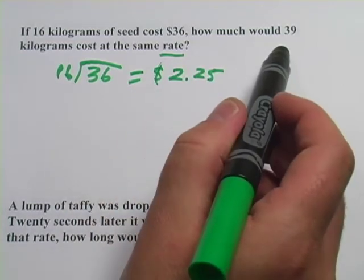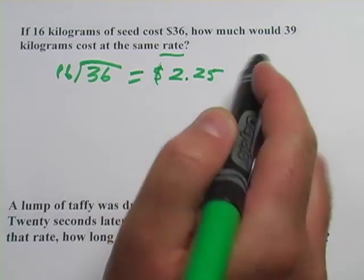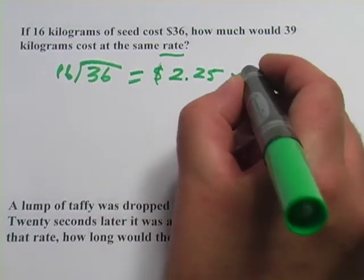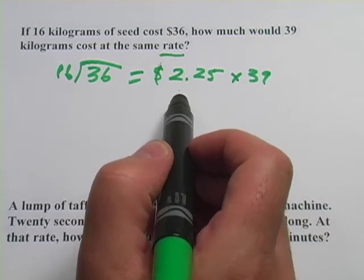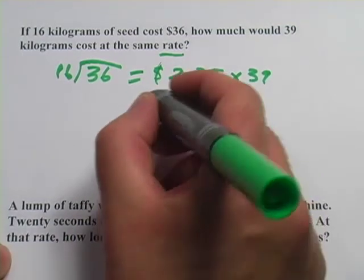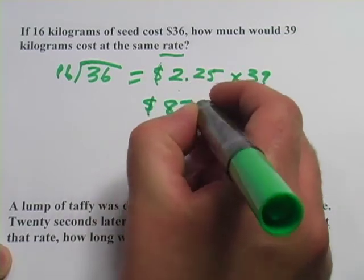Now when they ask how much would 39 kilograms cost, that's pretty easy. All we have to do is multiply that by the cost of the unit price of one kilogram, and we get $87.75.